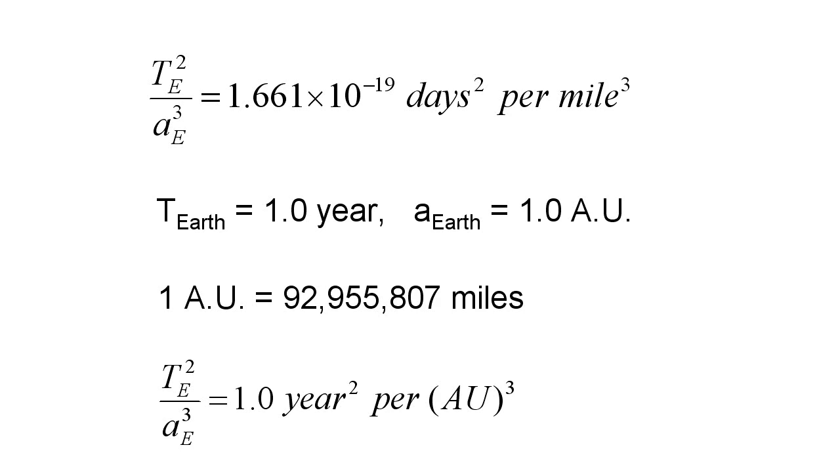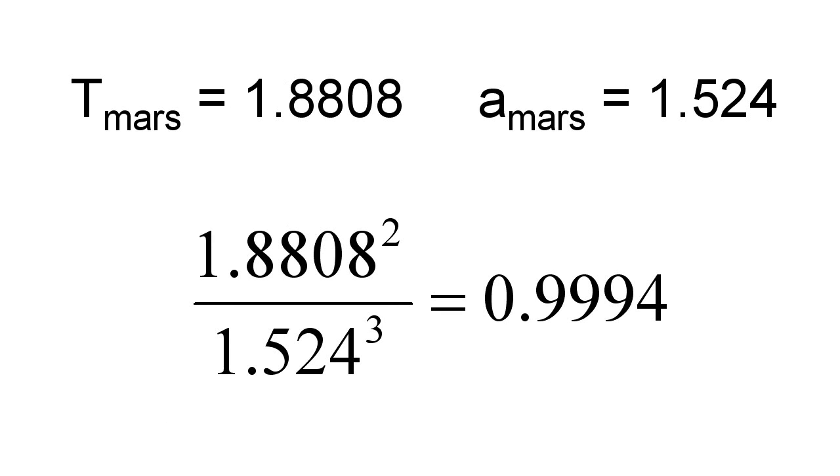To test this out, let's use Wikipedia to find T and A for Mars. T for Mars is 1.88 and A for Mars is 1.52. Then, T squared over a cubed for Mars is 0.999 something, which is pretty close to 1, so yay for Kepler.